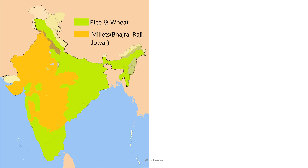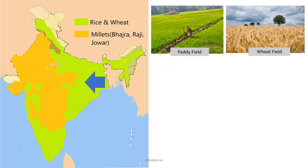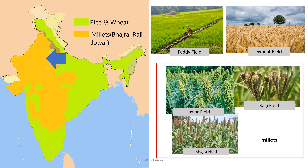Depending on what is grown in the region, the food prepared in these areas is different. Here is the map of India indicating the food crops grown in different parts of our country. As you can see, there are large rice and wheat growing areas in parts of the country where it gets enough rain. Millets are grown in areas where there is less rain.